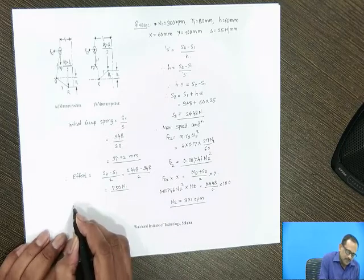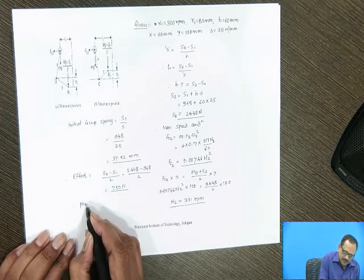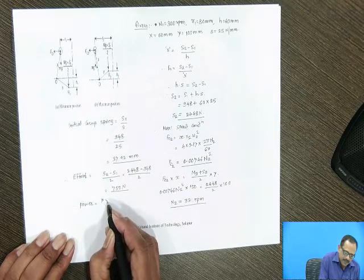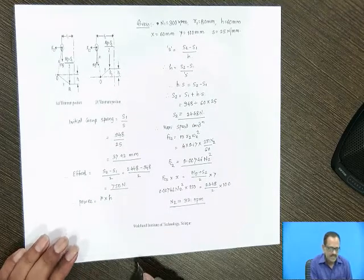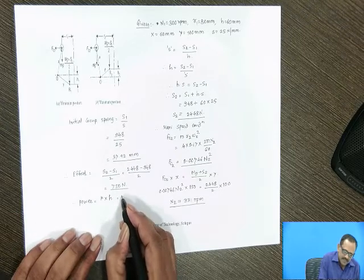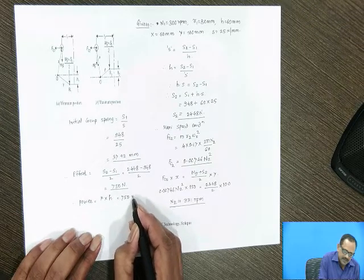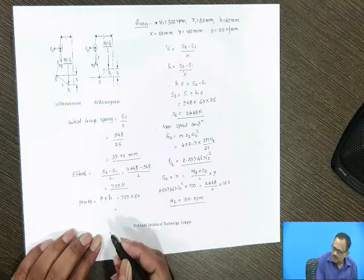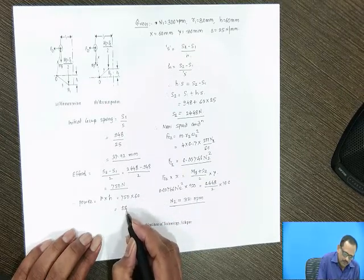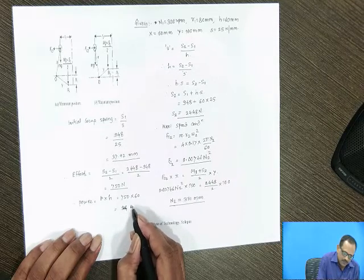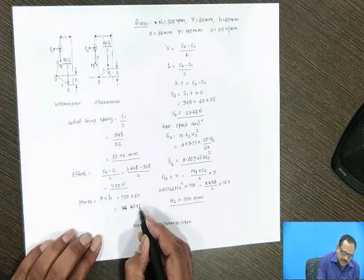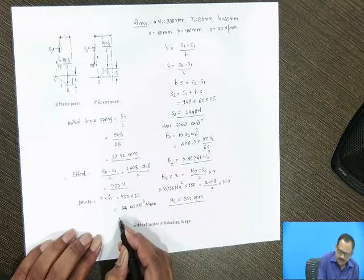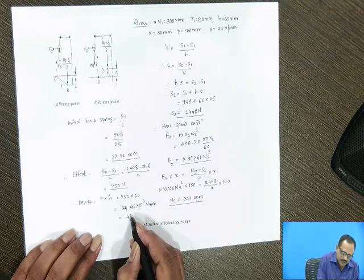Power of the governor is effort P into lift of the sleeve. P is 750 Newton into 60 mm, which gives 45 into 10 raised to 3 Newton-mm, or 45 Newton-meter.